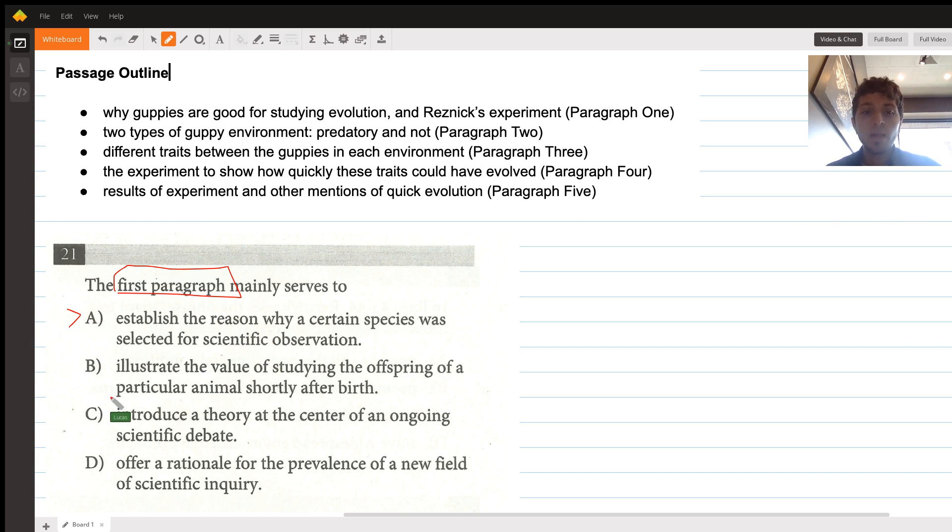B says illustrate the value of studying the offspring of a particular animal shortly after birth. This seems at first plausible—it's talking about studying the value of studying a particular animal, similar to A. The thing though is that it's focusing on the offspring of a particular animal shortly after birth, and neither in the first paragraph or later in the text does it talk about how he's studying the offspring shortly after birth. These two parts are right, but this part makes it wrong, especially in comparison to A, so we eliminate it.